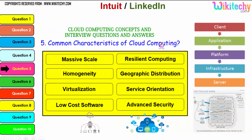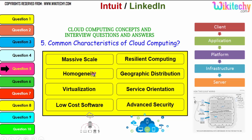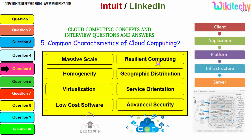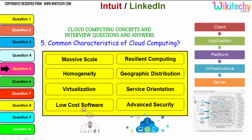Let's talk about the common characteristics of cloud computing. These are very important characteristics. First, massive scale — however big you need, it can be provided. Homogeneity — uniform usage across resources. Virtualization — you can create virtual machines and use them. Low cost software — it becomes really cheap. Resilient computing — processing is done remotely without disturbances. Geographic distribution — data and computing are geographically distributed. Service orientation — purely service-oriented. And advanced security.